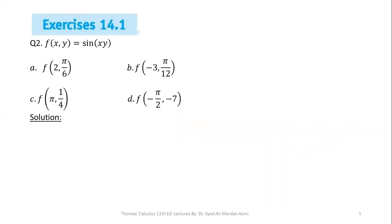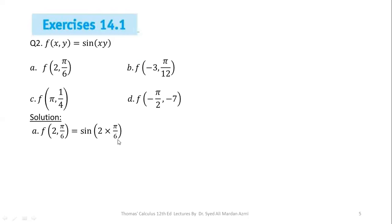Now we move to question number 2. The function is f(x, y) = sin(xy), and we have to calculate its value at specific ordered pairs. For part a, we calculate f(2, π/6). We replace x with 2 and y with π/6, giving sin(2 · π/6) = sin(π/3) = √3/2.